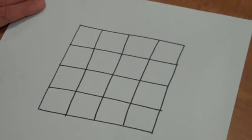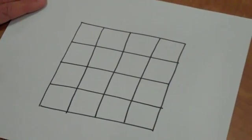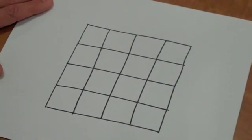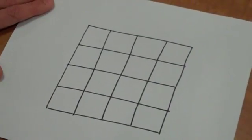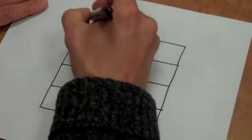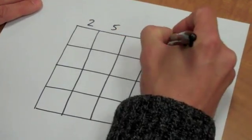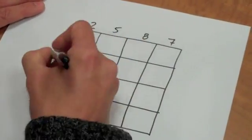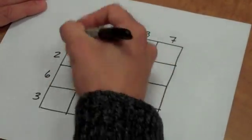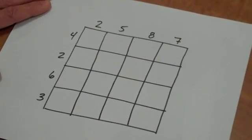The nice thing about this trick is that students can personalize it so that the result is whatever number they want. For instance, perhaps a student likes the number thirty-seven. That student could choose numbers along the top and the side that have a sum of thirty-seven. For instance, if they put two, five, eight, seven, four, two, six, three — the sum of those eight numbers is thirty-seven, and the result of the trick will always be thirty-seven.